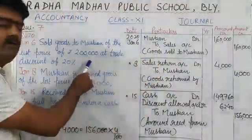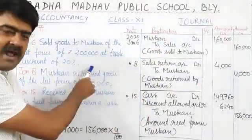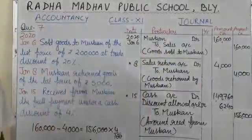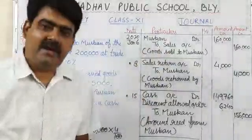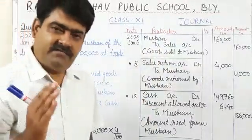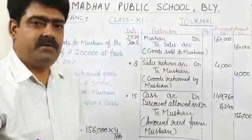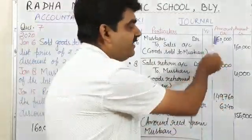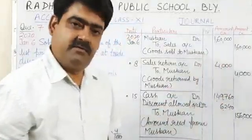The list price of the goods is 2 lakh and trade discount is 20%. So 2 lakh into 20% will be 40,000. 40,000 rupees will be deducted from 2 lakh and the amount will become 1,60,000.